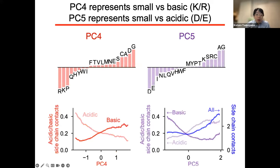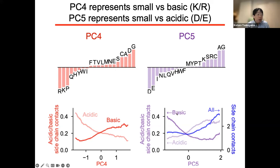I'd like to talk about PC4 and PC5 together. In PC4, we could see basic amino acids such as arginine or lysine show negative values. On the other hand, in PC5, acidic amino acids such as aspartate or glutamate show negative values. PC4 is anti-correlated with the number of acidic amino acid side-chain contacts, and PC5 is also anti-correlated with the number of basic amino acid side-chain contacts. These results are very reasonable. But more interestingly, in both PC4 and PC5, small amino acids such as alanine and glycine show positive values. This means that in terms of amino acid fitness, the opposite side of charged amino acids is actually the small amino acids, rather than oppositely-charged amino acids — a somewhat unexpected result before analyzing this kind of dataset.